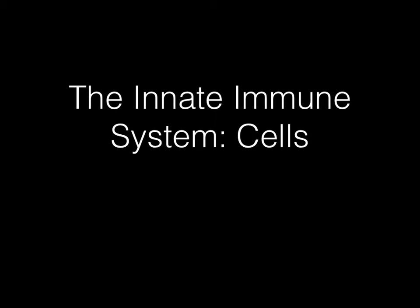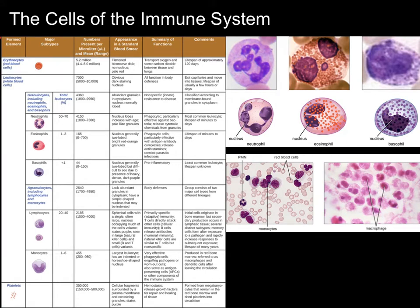Let's talk about the cells of the immune system. Most of you are probably familiar with the idea of white blood cells being your body's defense, and that is certainly true. White blood cells and a few related cell types are the main cellular defense of your body, and they play a role in both the innate and acquired immune response. Some of them play a pretty big role in both systems, but you've got a bunch of different types, and they each do subtly different things. This would probably make a pretty good matching question.